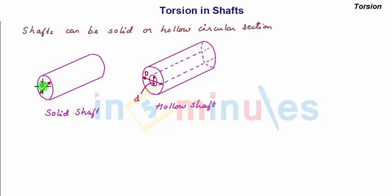Shafts can be solid or hollow circular section as shown in the figure. For solid shaft, diameter is D1, and for hollow shaft, its outer diameter is D and internal diameter is d.